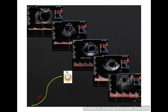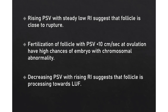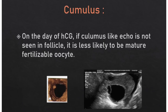Follicular monitoring helps time IUI: if PSV is more than 15 cm per second, single IUI is done 36 to 38 hours after HCG administration, whereas double IUI is done at 12 to 14 hours and 36 to 38 hours after HCG. IUI is the preferred method for dysovulatory infertility, idiopathic infertility, or male subfertility. Rising PSV with steady low RI suggests the follicle is close to rupture. Studies have shown that fertilization of a follicle with PSV less than 10 cm per second at ovulation has a high chance of embryos with chromosomal abnormalities. On the day of HCG, if a cumulus-like echo is not seen in the follicle, it is less likely to be a matured fertilizable follicle.